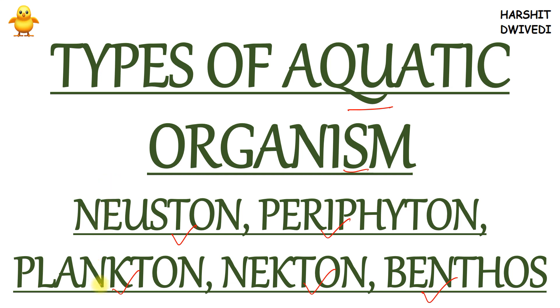Plankton is a very general word. Plankton is of three types: zooplankton, phytoplankton, and bacterioplankton. I will be discussing them in this video.